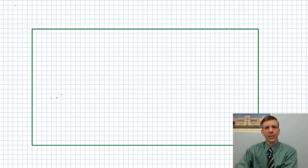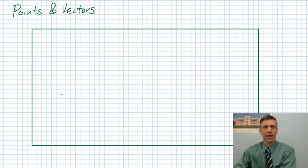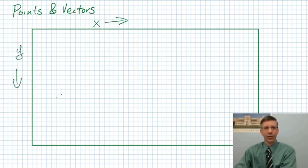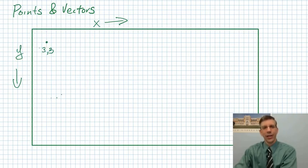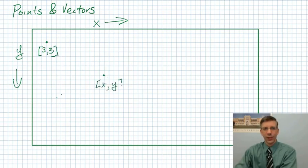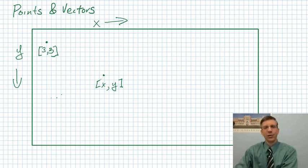I actually snuck in some discussion of points and vectors in that last program, and I want to step back and talk about them explicitly. In the drawing area with x and y coordinates, points make sense — a point like (3, 3) is three over in x, three down in y, represented as a list in Python. The ball position was represented as one of these points with an x-y coordinate. The velocity, however, was actually a vector.